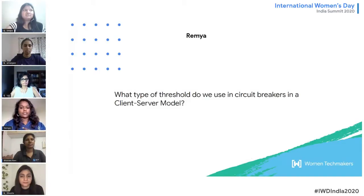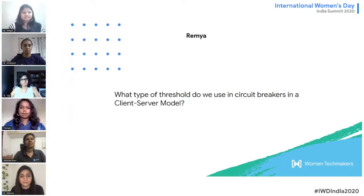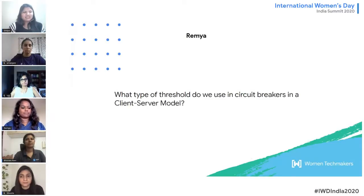The threshold here is the predefined number of times the request should be sent in case of exceptions. Another threshold is the timeout value for each circuit breaker. For implementation, in Python there is a PyBreaker library, and for Java there is a Jrec library. That summarizes the answer.